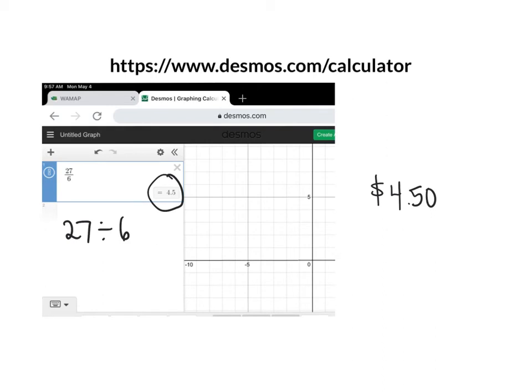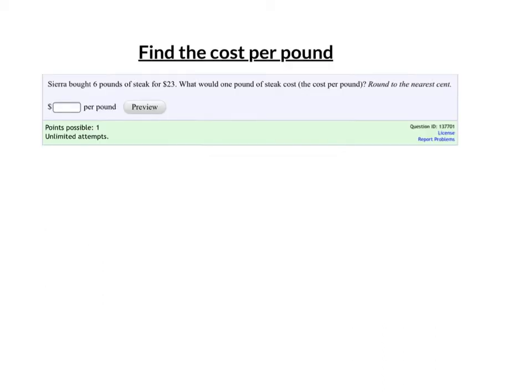One more example: If I bought 6 pounds of steak for $23, again I want the cost per pound, and per means divide, cost divided by the pounds. So the cost here is $23, the number of pounds is 6.